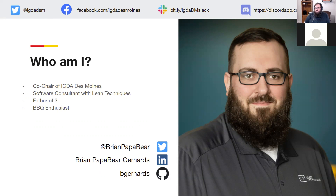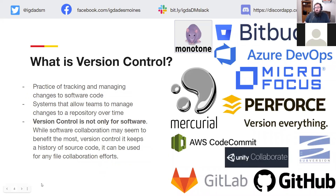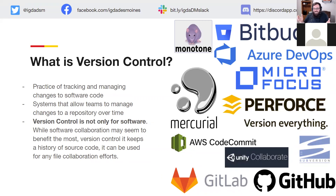As we're talking about Git, what we're really talking about is version control. Version control is the practice of tracking and managing changes to software code. Systems that allow teams to manage versions of a repository over time. Version control is not only for software — it can help manage files so that as a file changes over time, you get different versions of it and you can bring old versions back. That's the best way to say it — just the ability to bring versions back.